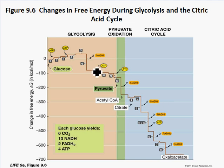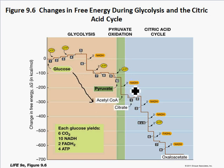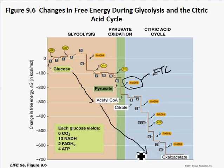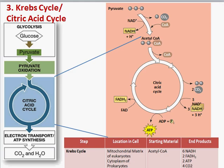Looking at our energy extraction graph: we started with glucose and have now dropped all the way down to acetyl-CoA. Here you see another big loss — that's during the redox reaction when we created NADH. NADH is so important because it's storing these electrons as potential energy; it's going to go to the electron transport chain and drop those off so we can make lots of ATP. Acetyl-CoA is not at the bottom yet, so we've still got more energy to extract.